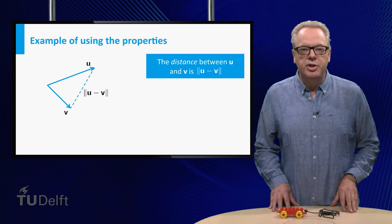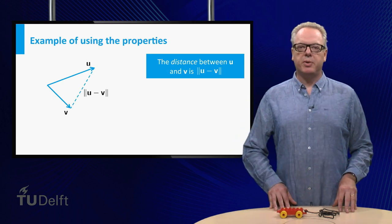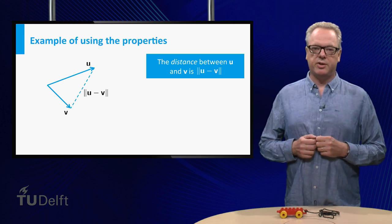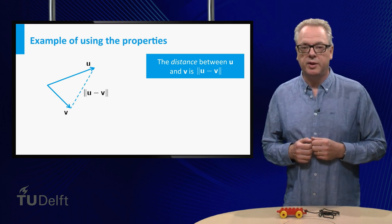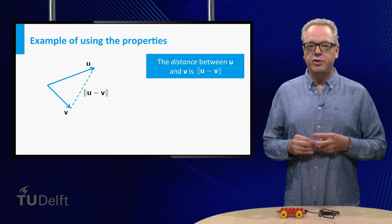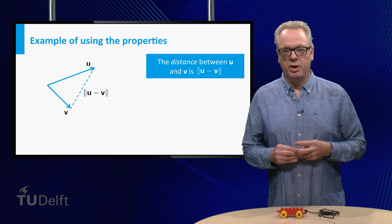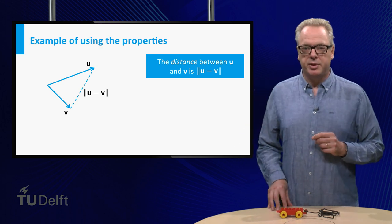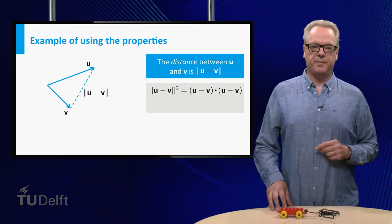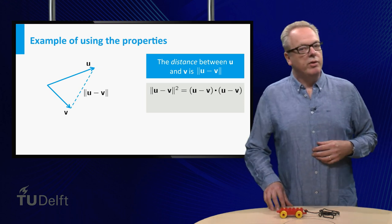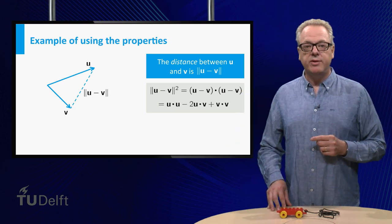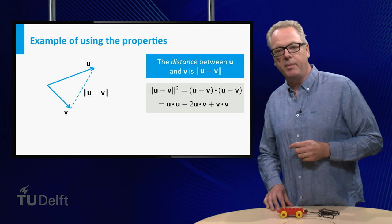This example shows how you can use these properties to write the distance between two vectors as a sum of dot products. Useful, since a geometrical approach is connected with an algebraic approach. Using the fourth property, you first write the square of the distance as a dot product. Now using the first three properties, you can rewrite the result as sum of dot products.